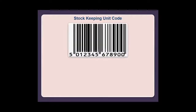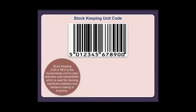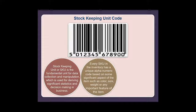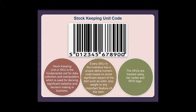Stock Keeping Unit (SKU) code: The SKU is the fundamental unit for data collection and manipulation, used for deriving significant statistics and decision-making in business. Every SKU in the inventory has a unique alphanumeric code based on some significant aspect of the item, such as color, size, weight, or any important feature. SKUs are tracked using barcodes and RFID tags.